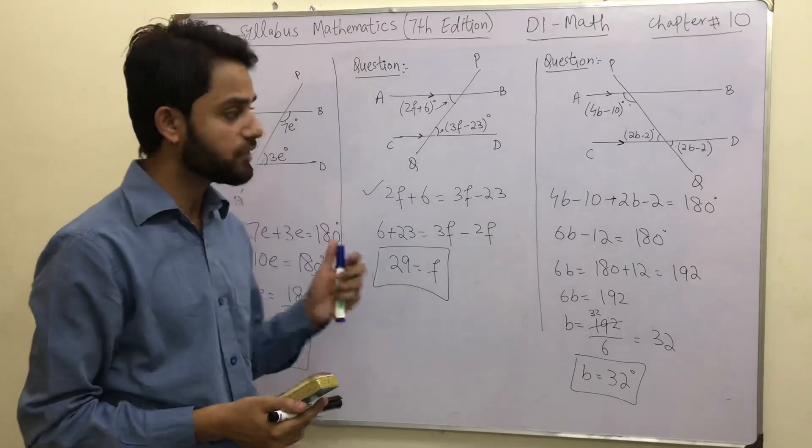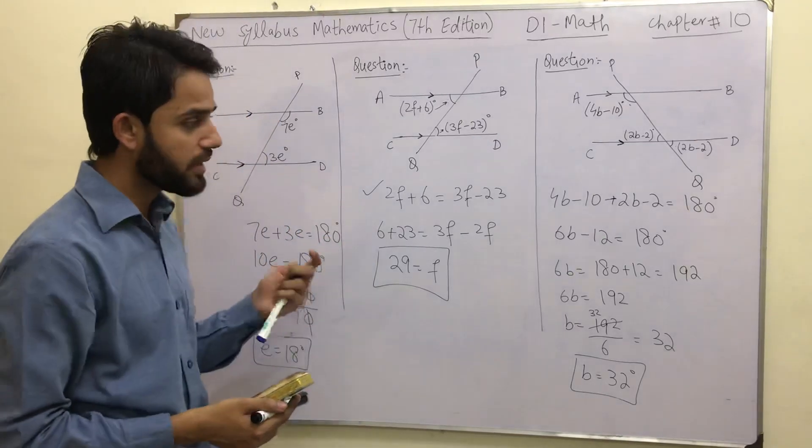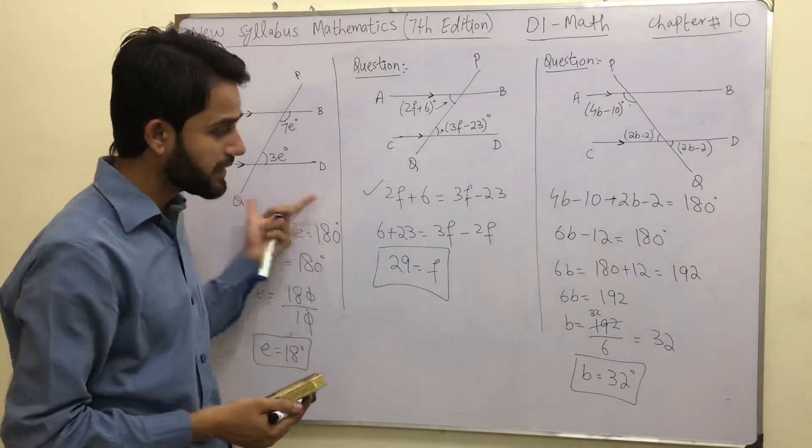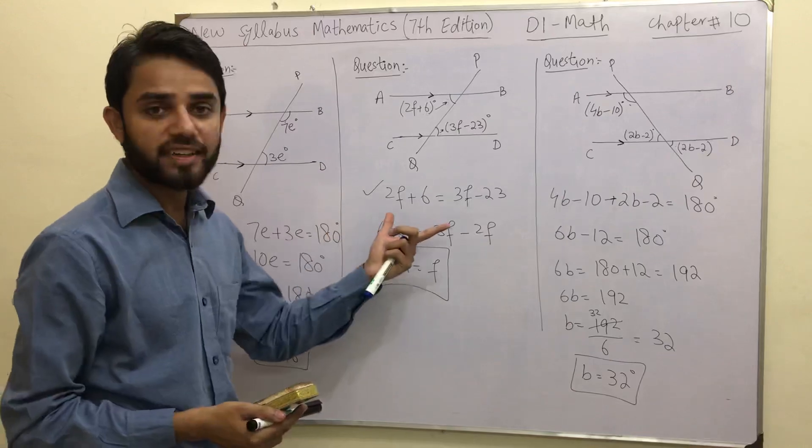So B equals 32 degrees — that is your answer. Please subscribe and share this video so it can help many others, and don't forget to verify your answers the way I have explained.